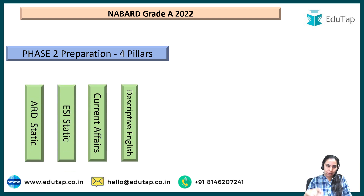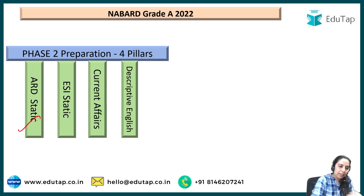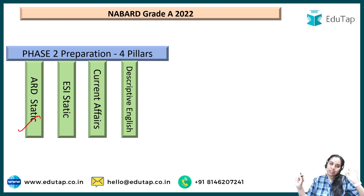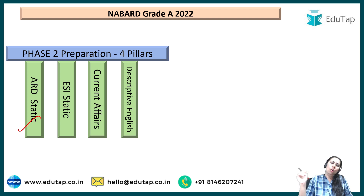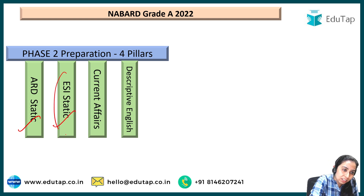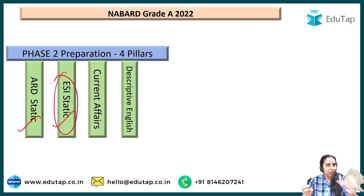The first pillar is ARD static — you cannot ignore it. Whether you have an ARD background, an agriculture background, or you have never studied agriculture, it makes no difference. You have to study it. You don't have to go into a lot of depth or cover the full syllabus end-to-end, but ARD static you have to cover. Then ESI static — ESI static is quite relevant in Phase 2. The weightage is less in Phase 1, but it will not harm you there either; it will get you extra marks somewhere.